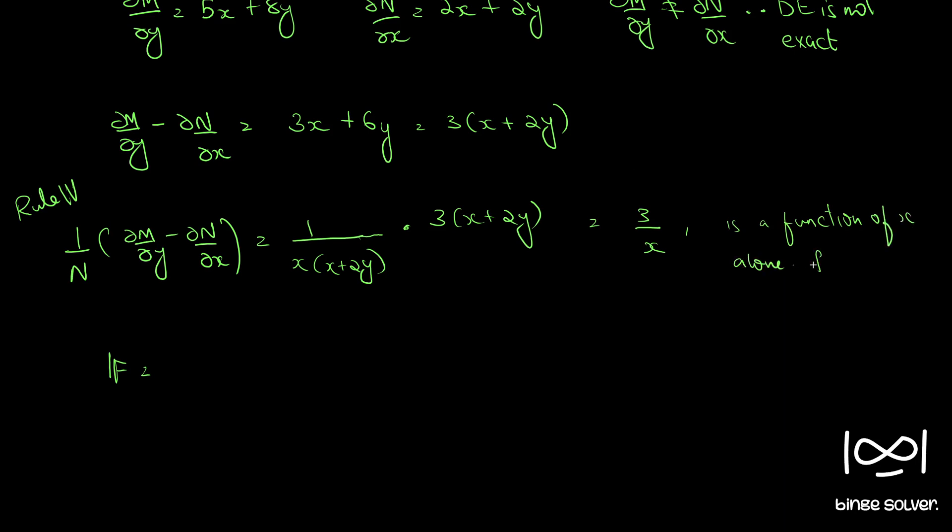Let's call that function f of x, that is f of x is equal to 3 by x. So rule 4 says integrating factor is e raised to integral f dx, which is e raised to integral 3 by x dx, which is e raised to 3 log x.